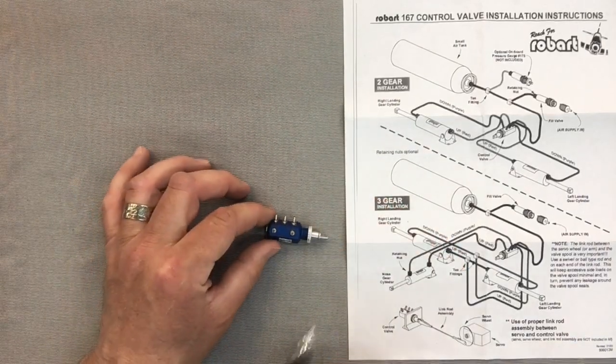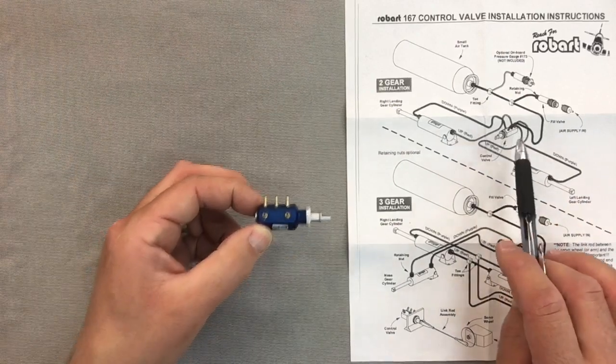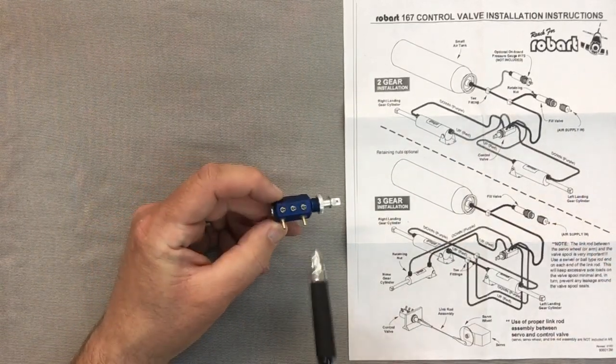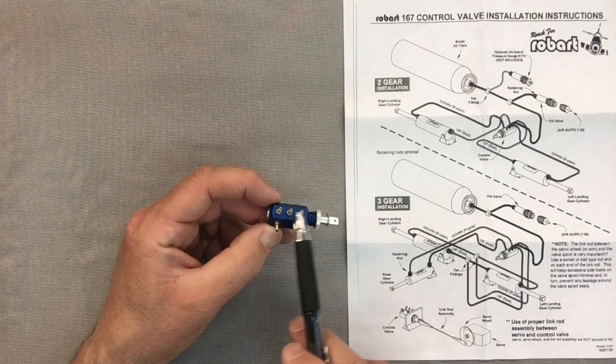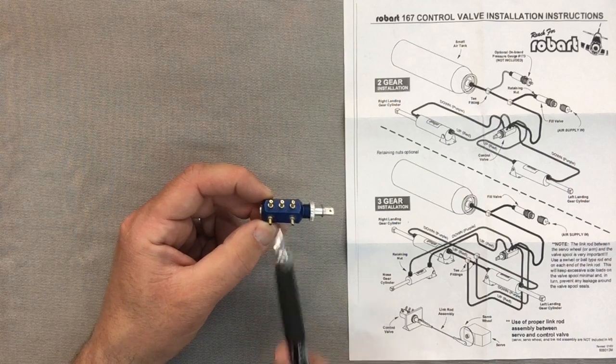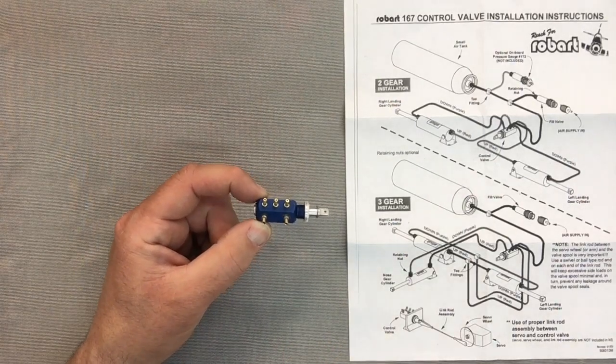Each of the nipples here on this diagram will show you where or what they're doing. On the side here where you have the three nipples, the middle one is the air in. Each of the other four are the air out.